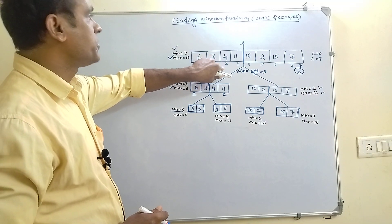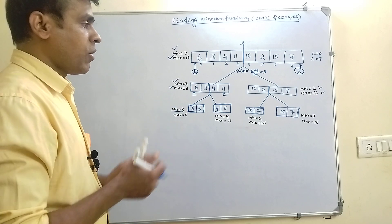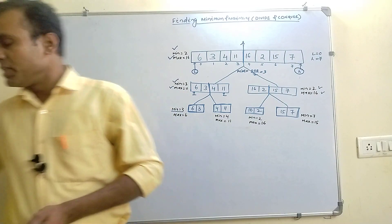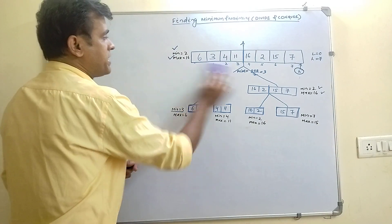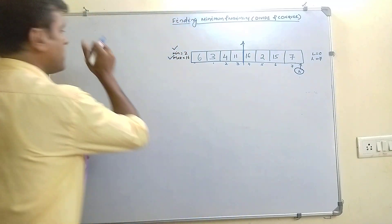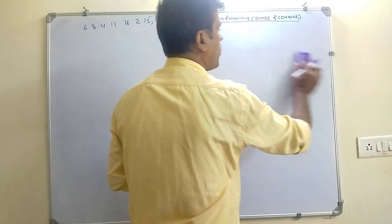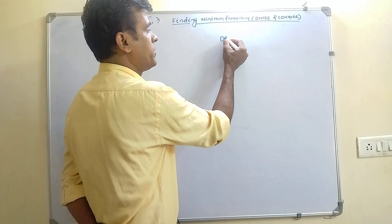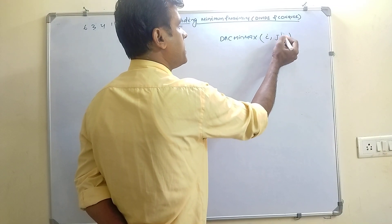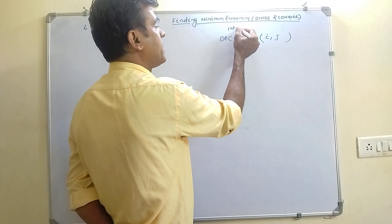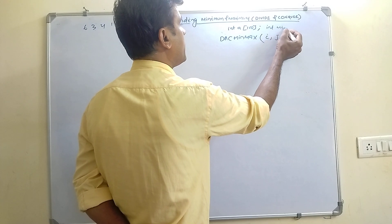This is the principle of divide and conquer for finding the minimum and maximum of an array of n elements — a GATE question usually comes on this. Now let us write the algorithm. I have noted the numbers 6, 3, 4, 11, 16, 2, 15, and 7. For the divide and conquer min-max algorithm, we need only two parameters i and j. You can declare your array globally — integer array of 100 — and min and max also as global variables.